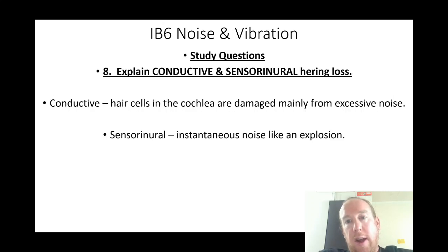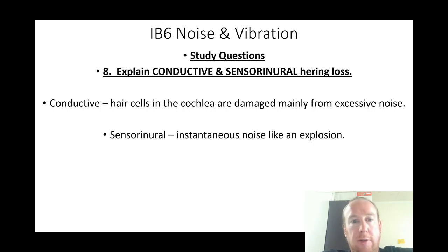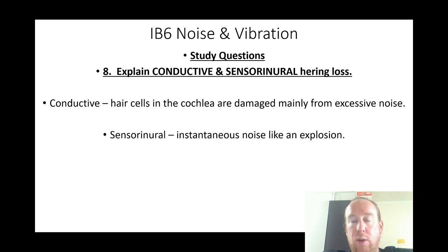Conductive versus sensorineural hearing loss: conductive hearing loss — hair cells in the cochlea are damaged, mainly from excessive noise. Sensorineural hearing loss — caused by instantaneous noise such as an explosion.